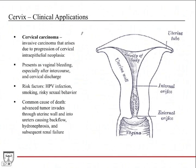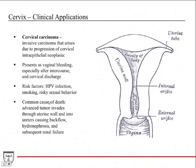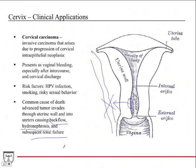Cervical carcinoma is a very invasive carcinoma — again, why the HPV vaccine is very important. It arises from the pathological progression of cervical intraepithelial neoplasia. It presents as vaginal bleeding, especially after intercourse (post-coital bleeding), and cervical discharge after intercourse. Risk factors include HPV infection, smoking (a heavily tested risk factor), and risky sexual behavior. The most common cause of death is when the tumor in the wall of the uterus advances and compresses the ureter, causing backflow, hydronephrosis in the kidney, subsequent renal failure, and death.